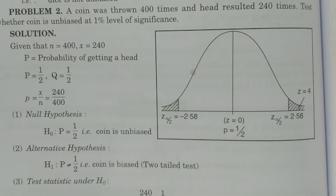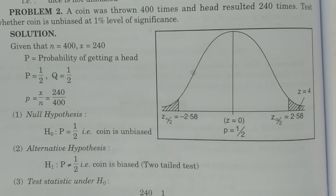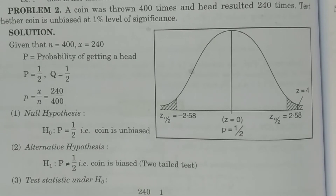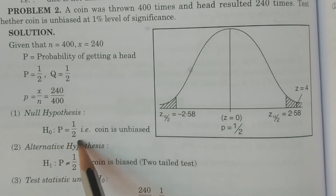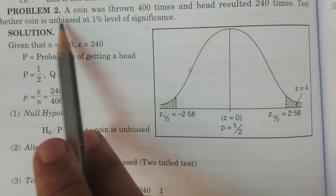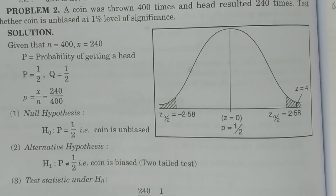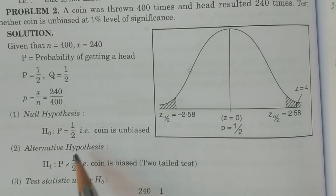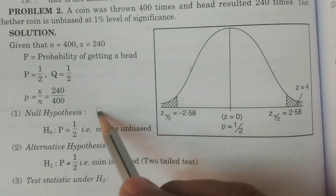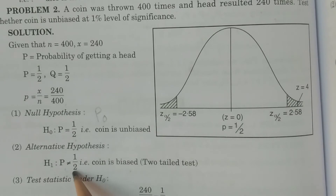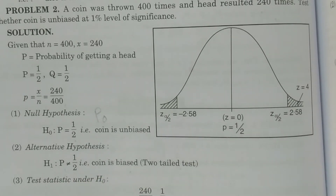Null hypothesis H0: Capital P is equal to one by two — the coin is unbiased. This is P0 equal to one by two. Alternative hypothesis H1: Capital P is not equal to one by two — the coin is biased. Since H1 uses 'not equal to', this is a two-tail test.